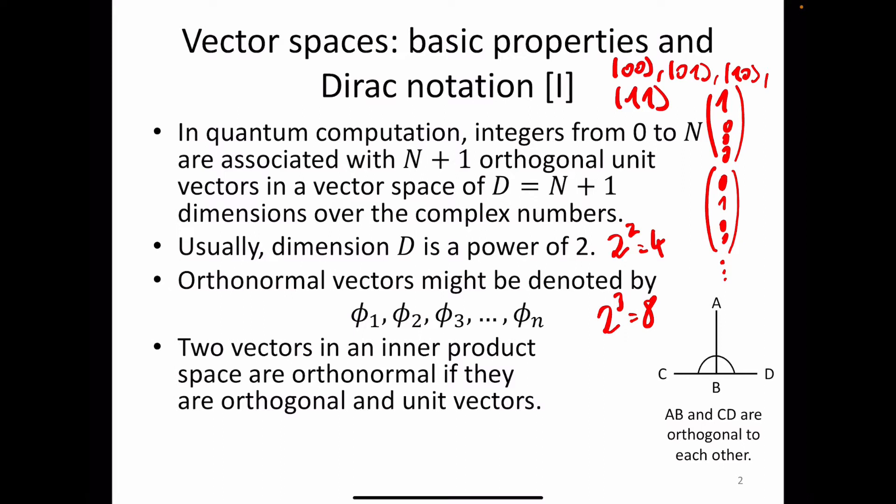Orthonormal vectors may be denoted by phi sub 1, phi sub 2, and so on up to n. Orthonormality summarizes two conditions: vectors need to be orthogonal to each other, and they need to have unit length and preserve unit length when we execute transformations — which is guaranteed because we only execute unitary transformations, as discussed in the last lecture.